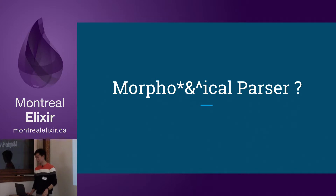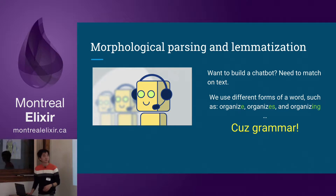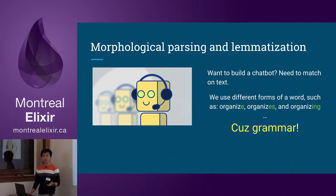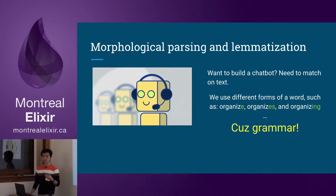So what is a morphological parser? This is a very essential thing we use for processing natural language. Let's say you want to build a chatbot and you need to match a lot of text. You don't want to match every single word — organize, organizes, organizing — because English grammar has a lot of this kind of inflection or morphology. We want to give every word a canonical, normalized form so we can do less indexing and less processing later on.